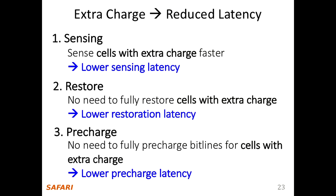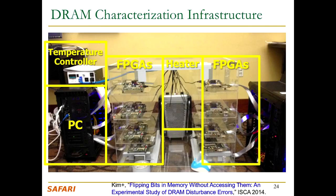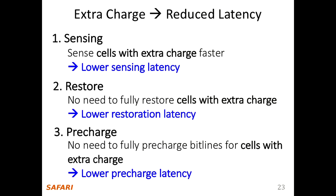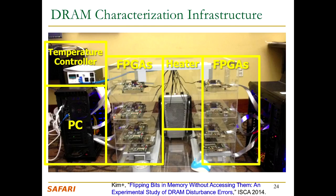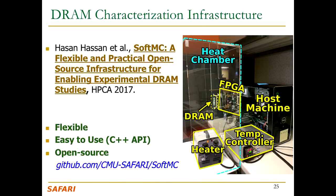For cells with extra charge, you don't need to fully restore charge because they already have a lot - you can reduce restoration latency. Also for pre-charging: you don't need to fully pre-charge bitlines for cells with extra charge, since they can perturb bitlines very easily. The difficulty is when a cell has very small charge, the perturbation it causes is much less. To study this variation, you need experimental infrastructure - specifically SoftMC, developed by one of the TAs.